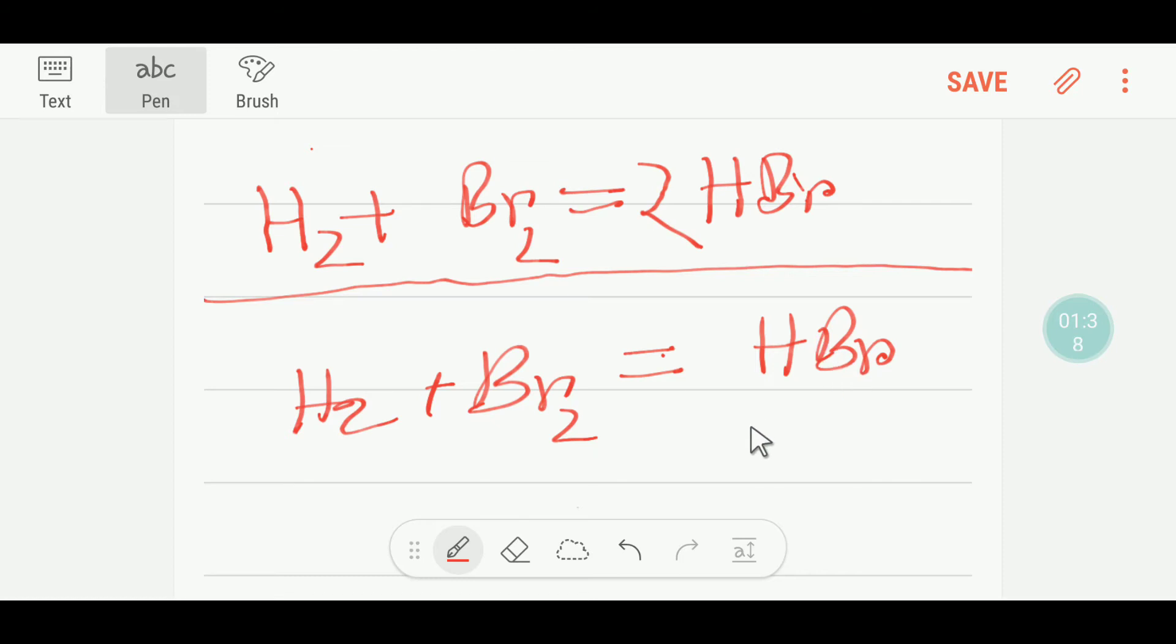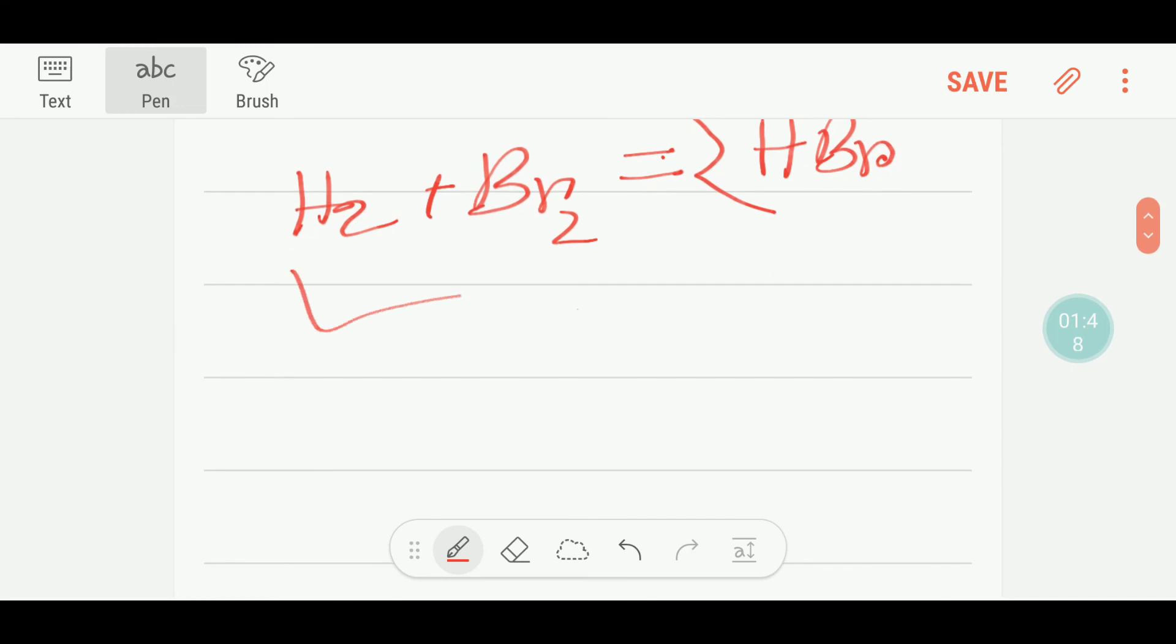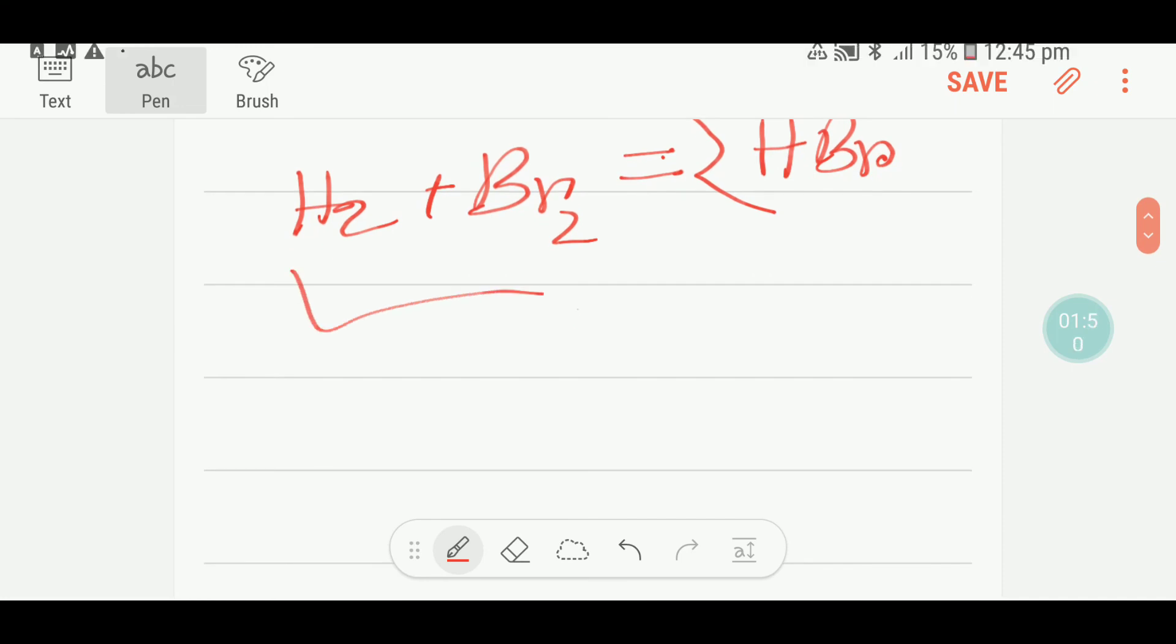From your common sense, you see this has two bromine but it has one bromine, so I would like to put here two. That gives me two hydrogen, two bromine - now it is balanced. So it is not hard to balance.